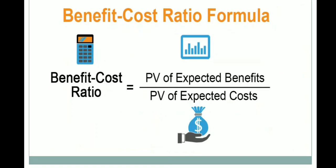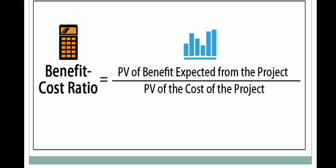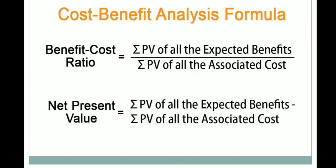The benefit-cost analysis ratio should be more than one. The benefit-cost ratio is the present value of the expected benefits divided by the present value of the expected costs. We can also express it as the expected benefit from the project divided by the cost of that project, or as the net present value — the present value of all expected benefits to the present value of all associated costs.